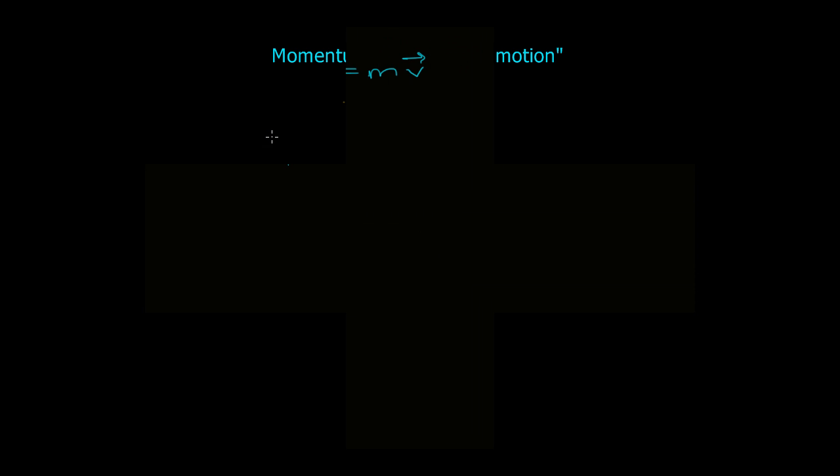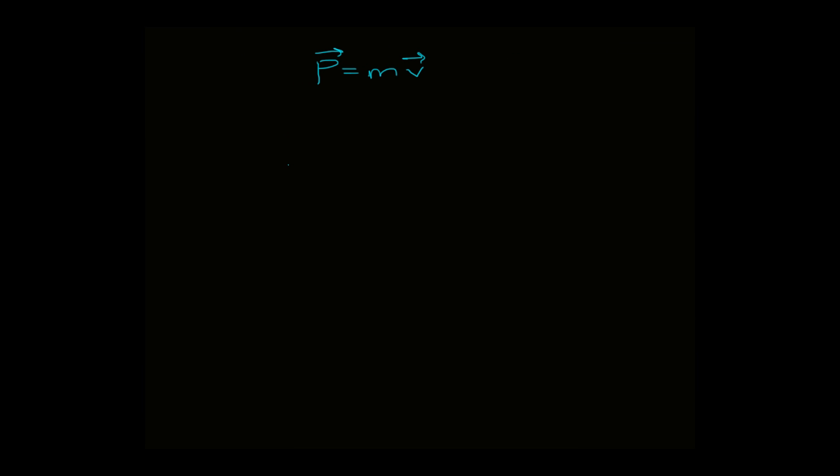Today we're going to talk about momentum and its derivative. So momentum is a vector and it's equal to the mass times the velocity vector, so P = mv. So it's the quantity, and Newton said that this is the best way to measure an object's quantity of motion.